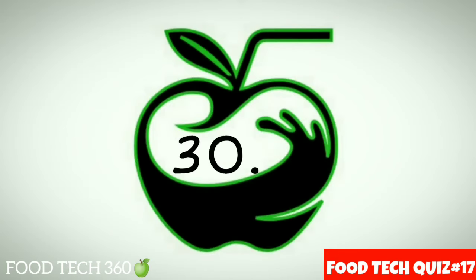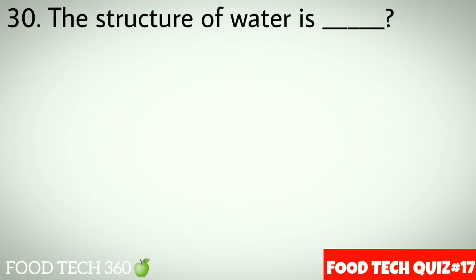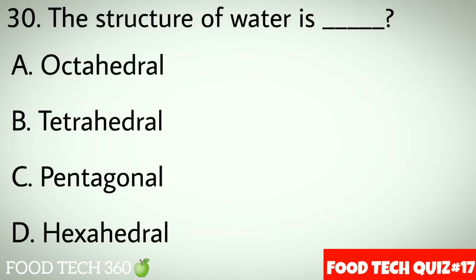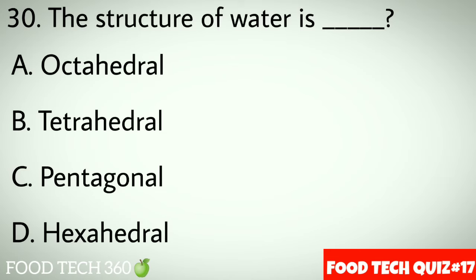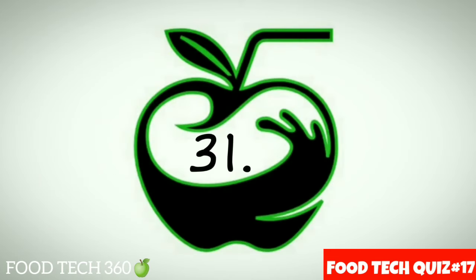Question number 30: The structure of water is dash. Options: A. Octahedral, B. Tetrahedral, C. Pentahedral, D. Hexahedral. Correct answer: B. Tetrahedral.